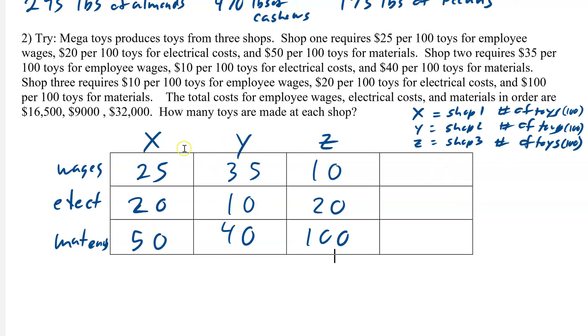The top is all wages. Shop one has $25 per 100 toys in wages, shop two is $35, and Z is the cheapest amount of wages but they have the highest materials costs. So total wages is $16,500, $9,000 in electrical total charges, and $32,000. We're getting $25 per 100 toys from shop one, $35 per 100 toys from shop two, $10 per 100 toys for shop three, and that total amount in wages has to be $16,500.